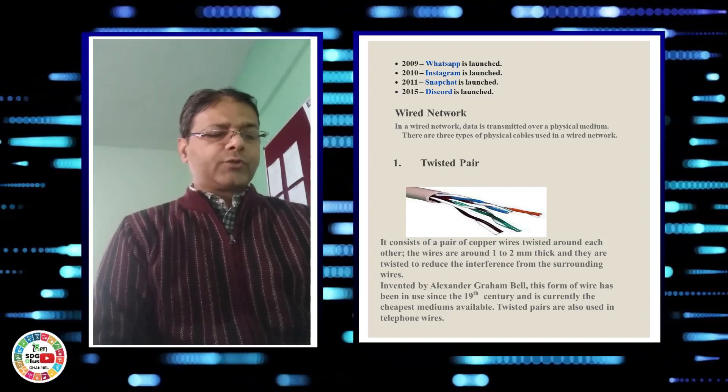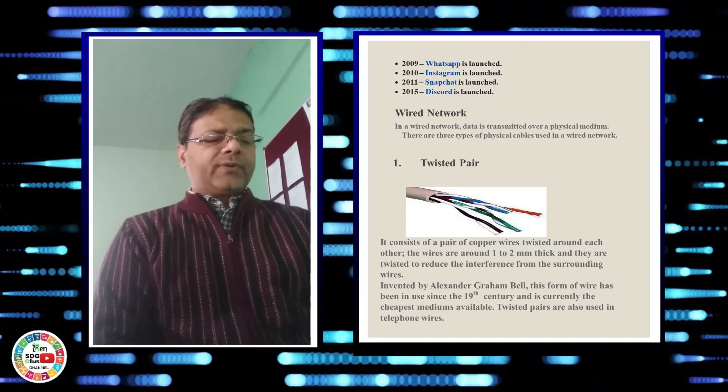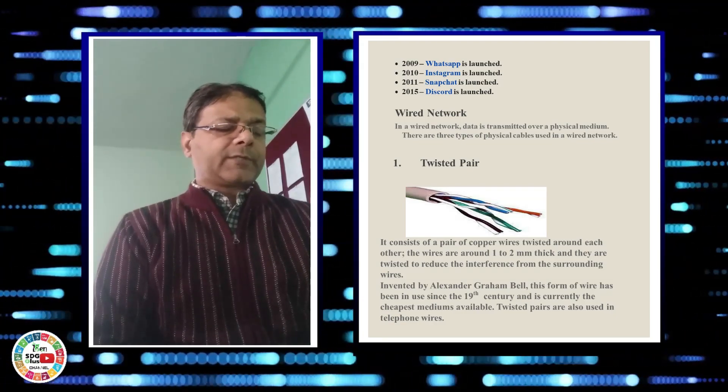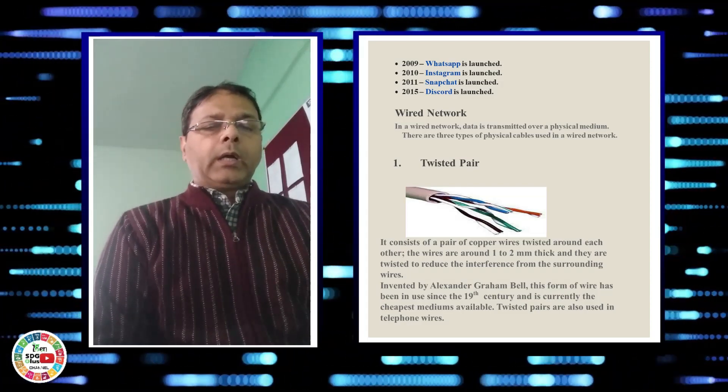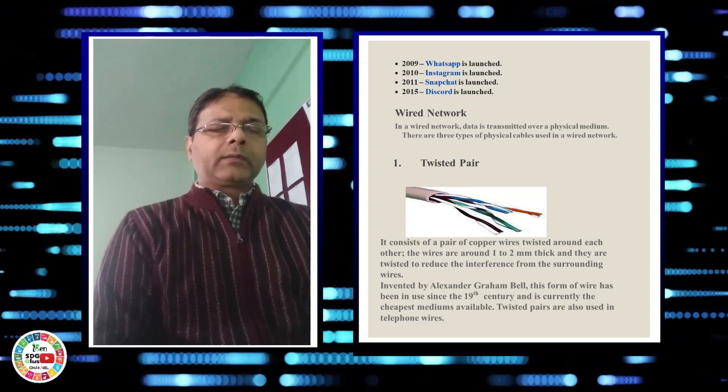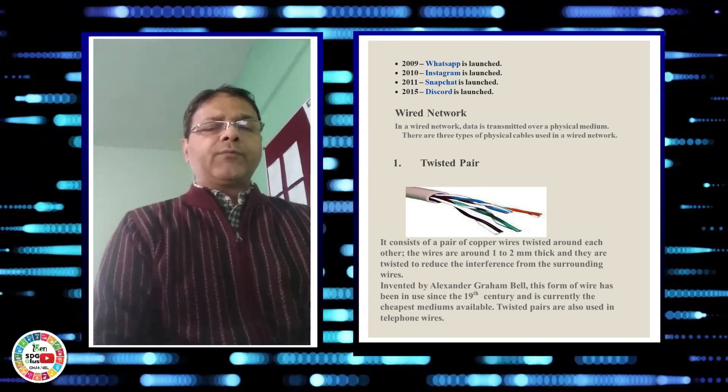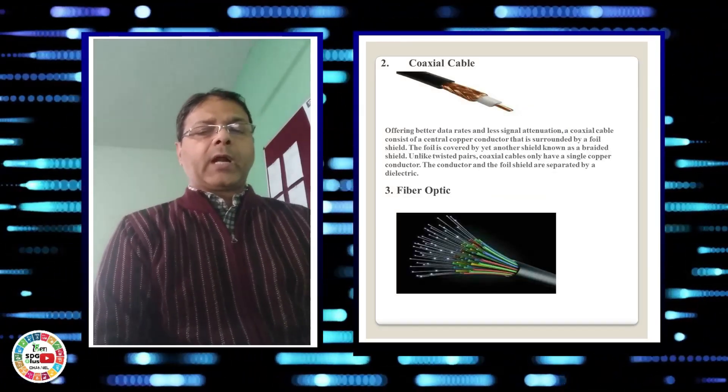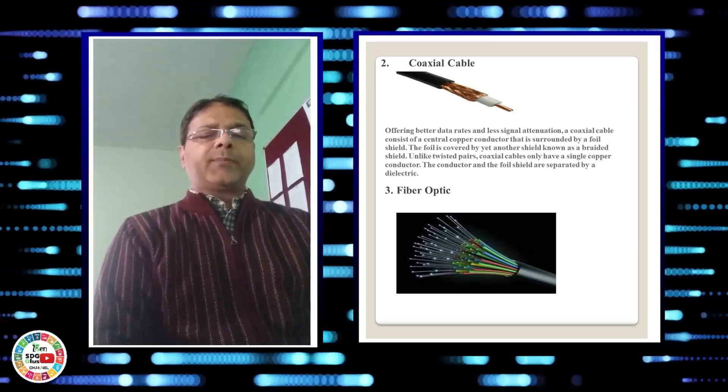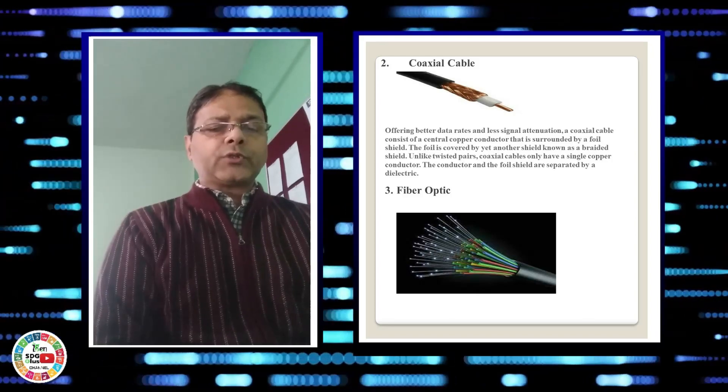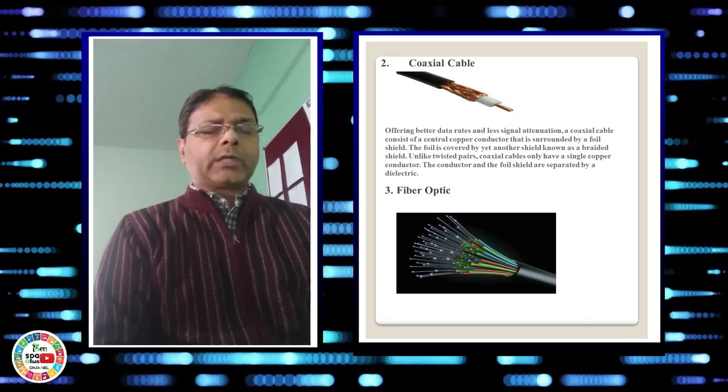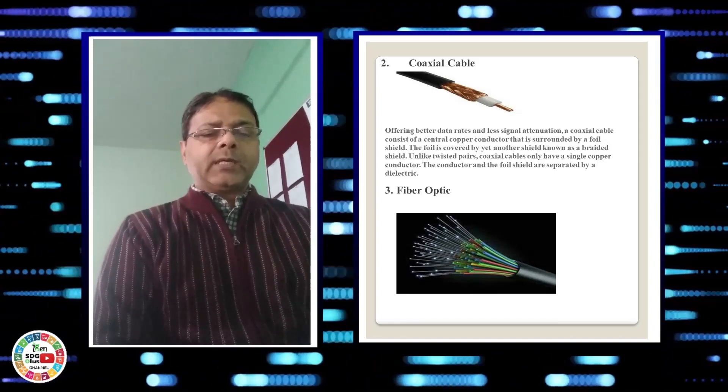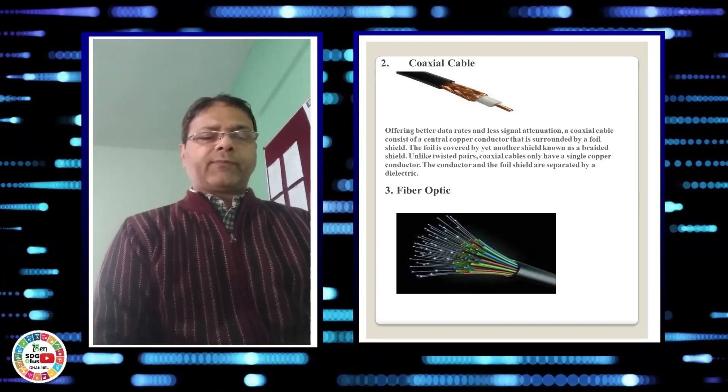The example of physical media is wire line system by using conducting wires or insulating wires, and the second one is space. In physical media, which is conducting media, we are using twisted pair and coaxial cable. Twisted pair is used in telephone communication, whereas the coaxial cable is used in TV communication using cable networking or using dish antennas. In optical fibers, we are transmitting signals in the form of light.